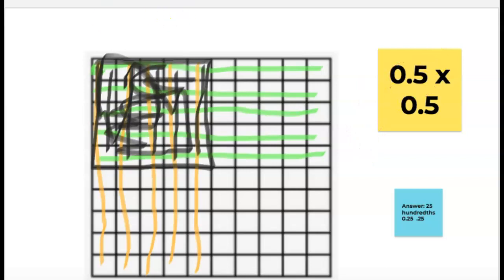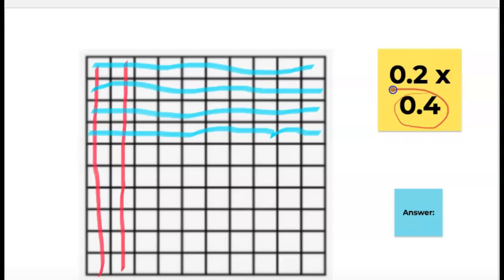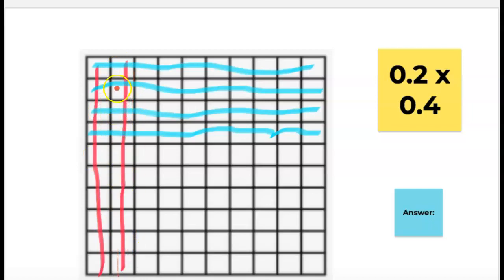Let's move on and try another one. Over here we have two tenths times four tenths. So I have a decimal multiplied by a decimal. This is a number smaller than one, so my answer is actually going to get smaller. I'm going to find my answer where these two numbers cross.